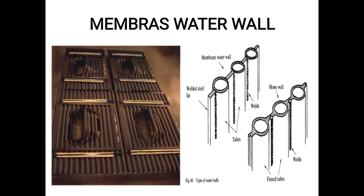To prevent this, we use membrane water walls. In a membrane water wall, the gap between two tubes is filled by a plate — as seen in the sketch and real picture, the gaps between the tubes are completely filled with a plate, preventing clinker and corrosion buildup.